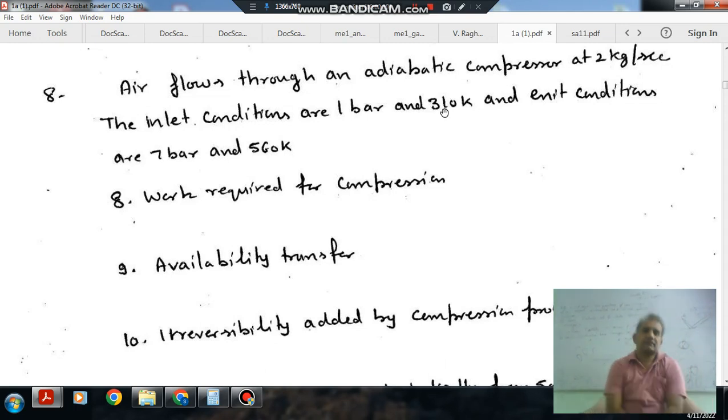Question number 8: Air flows through an adiabatic compressor at 2 kg per second. The inlet conditions are 1 bar and 310 K. The exit conditions are 7 bar and 560 K.